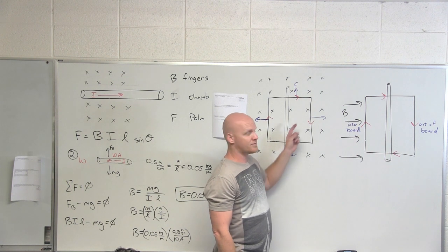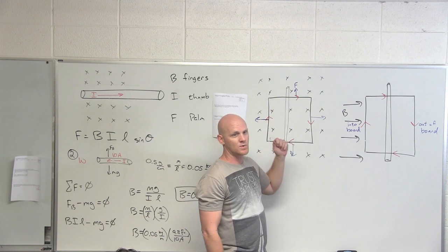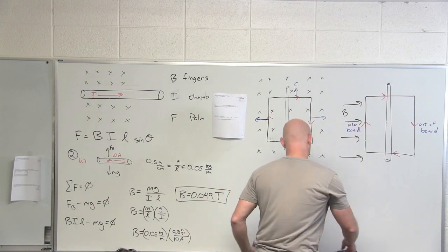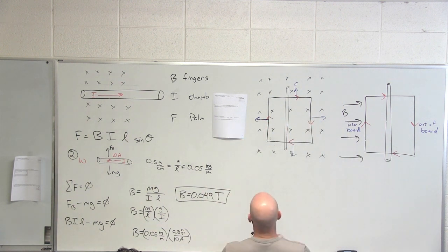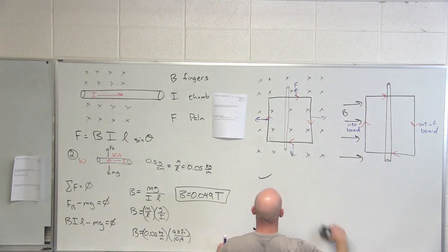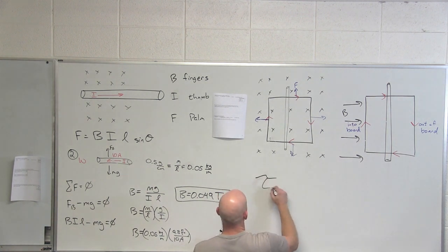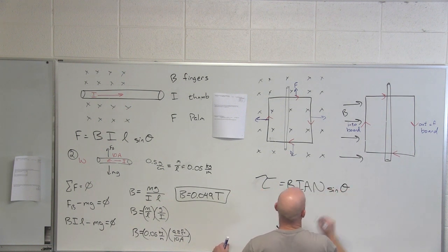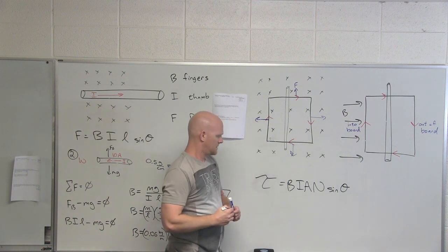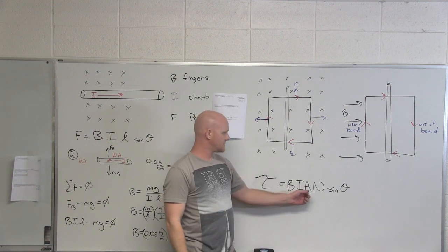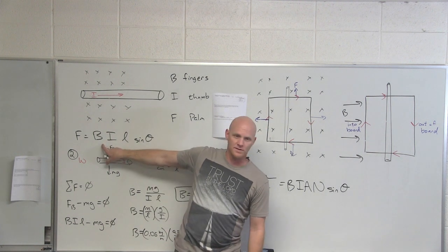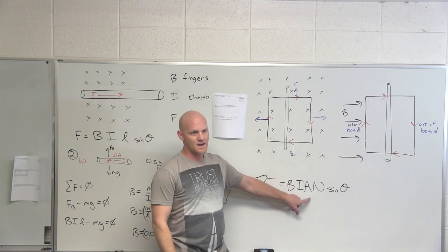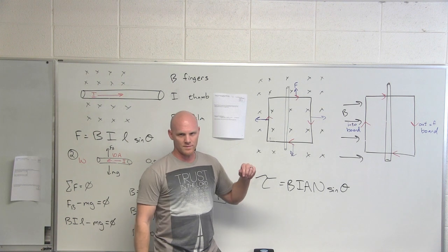There was no net torque in the first case — the forces cancelled and weren't in a direction to generate torque. But when the field and loop are perfectly parallel, that's when your torque is at a maximum. The next equation on your handout is the torque on a current-carrying loop. You might see it written as NIAB or ILB sinθ depending on your textbook — the order doesn't matter.